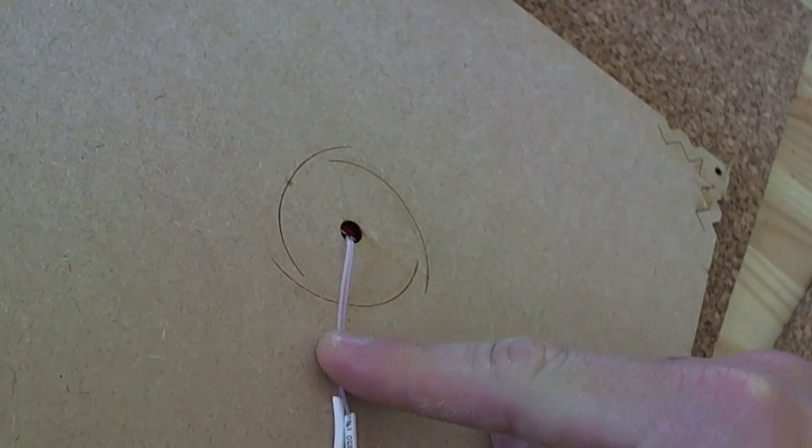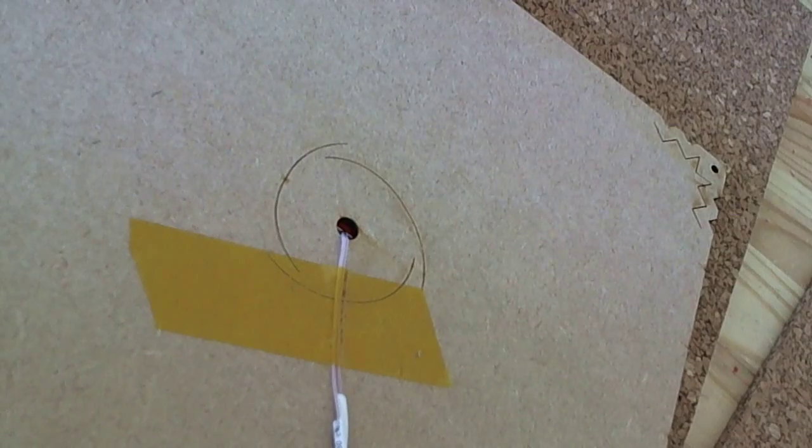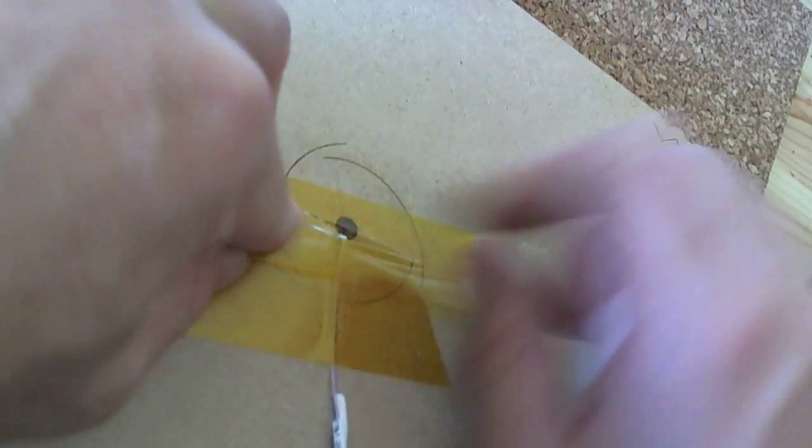Give it some space to move around and just put some tape over it right there. This is Kapton tape. It's heat resistant tape. It doesn't melt. Use it on 3D printed beds.